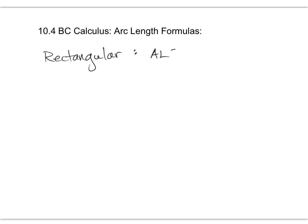Arc length — we'll just call it AL — is equal to the integral of the square root of one plus f-prime squared, dx. It goes from some a to b value, and those are x values. The limits are x values.